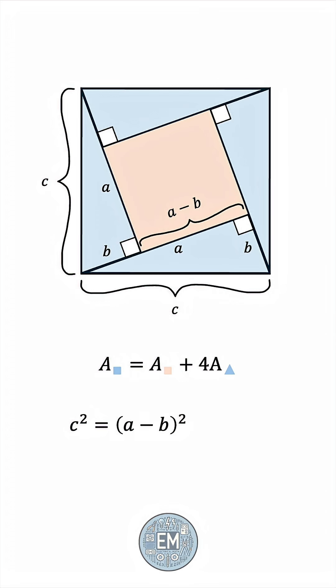Each triangle has area half base times height, where the base and height are A and B, so we have 4 times AB over 2, which simplifies to 2AB. Now, let's open up the square. This gives us A squared plus B squared minus 2AB, and this cancels with the plus 2AB, leaving us with A squared plus B squared equals C squared.